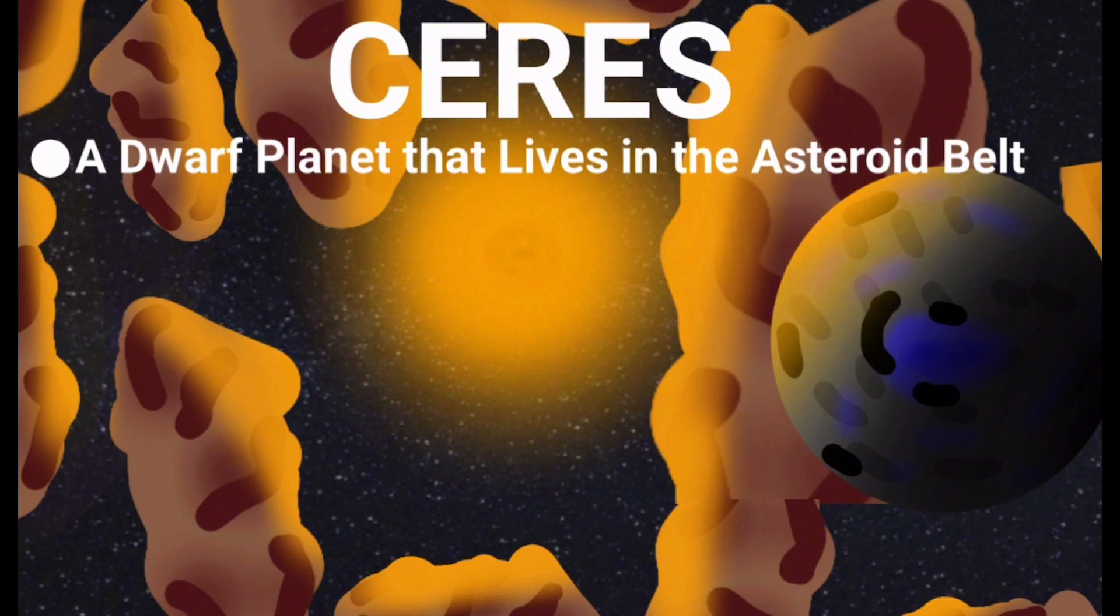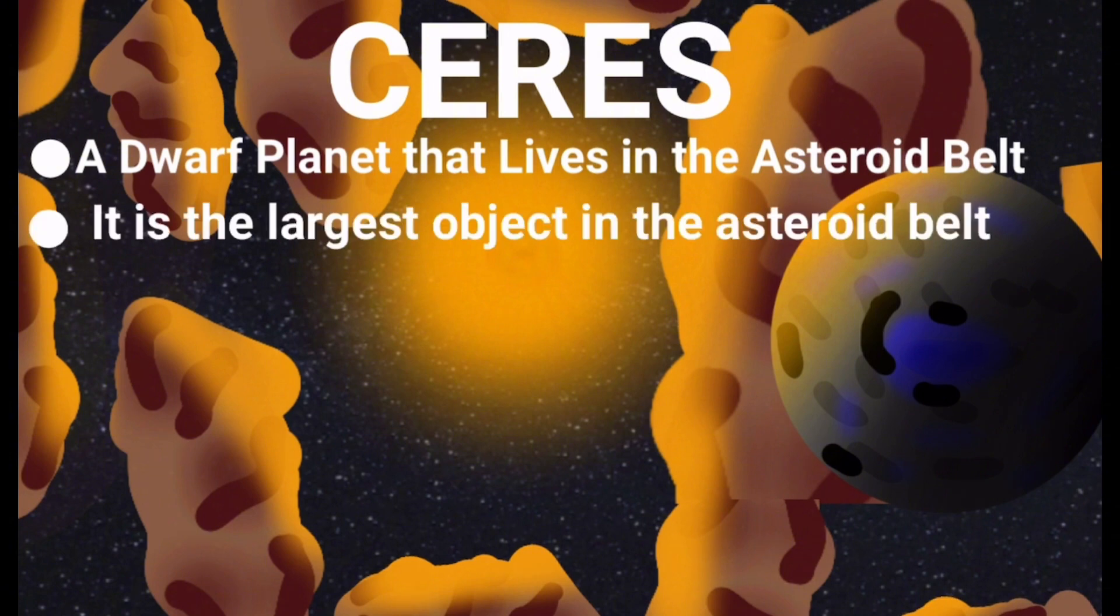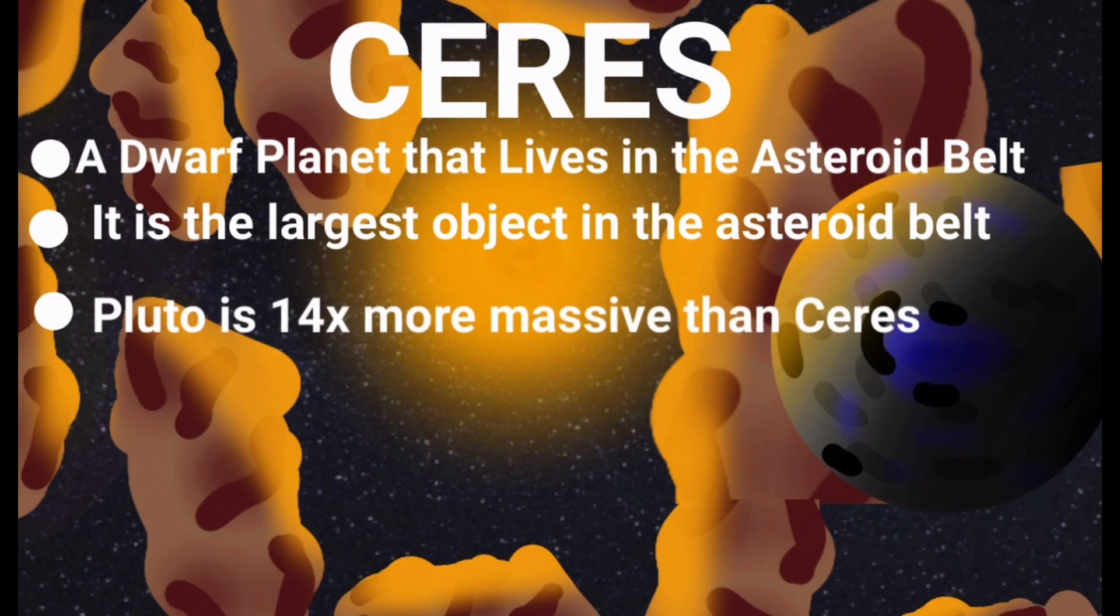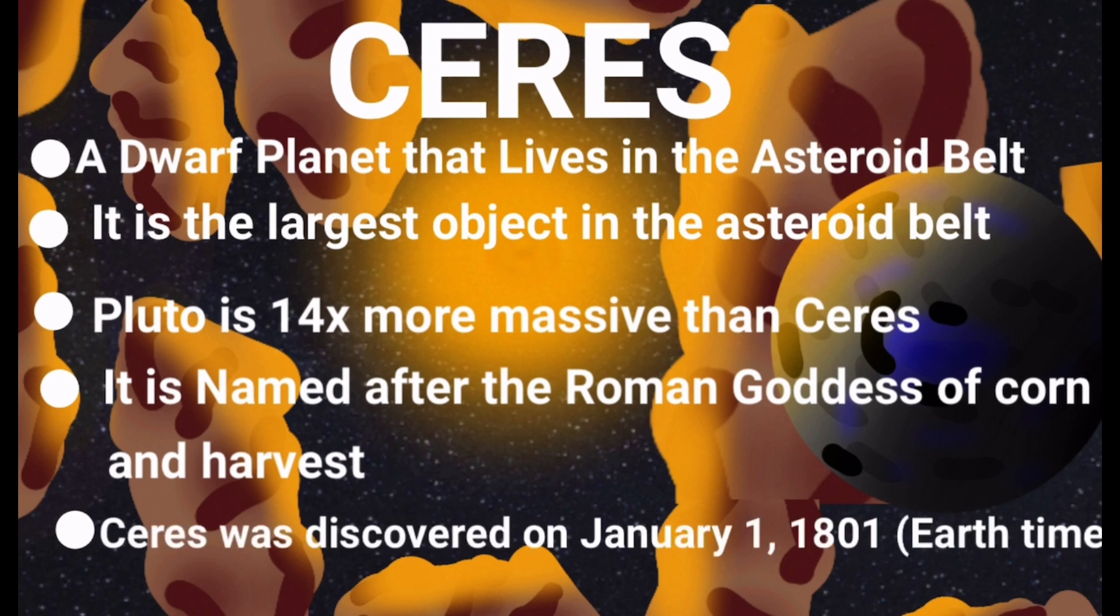Anyway, Ceres is a dwarf planet that lives in the asteroid belt. It is the largest object in the asteroid belt. Pluto is 14 times more massive than Ceres. Ceres was named after the Roman goddess of corn and harvest. Ceres was discovered on January 1, 1801 by the Earthlings.